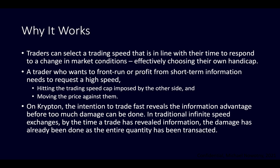A trader who wants to profit from short-term information needs to request a high speed, but this will bump up against the trading speed cap imposed by the other side and also move the price against them. On Krypton, the intention to trade fast reveals the information advantage before too much damage can be done. In traditional exchange mechanisms, such as AMMs and limit order books, by the time a trade has revealed information, the damage has already been done, because the entire quantity that can be traded at the prevailing market price has been traded.